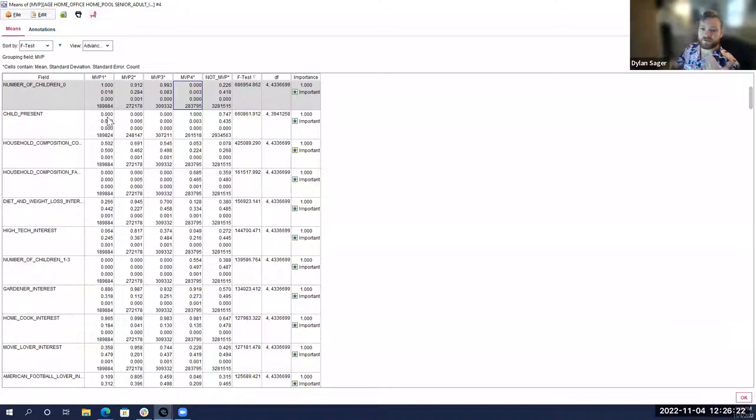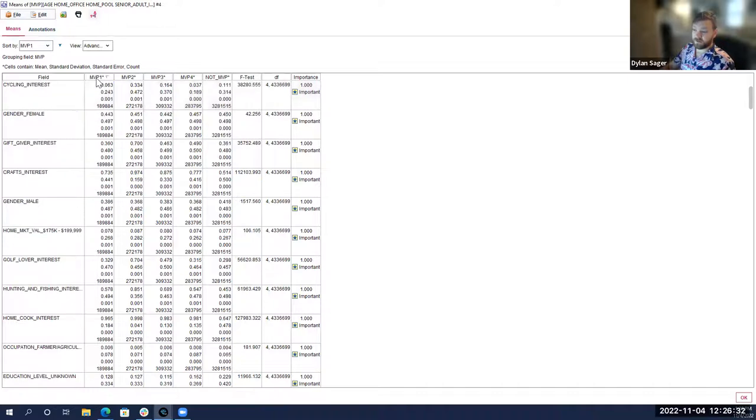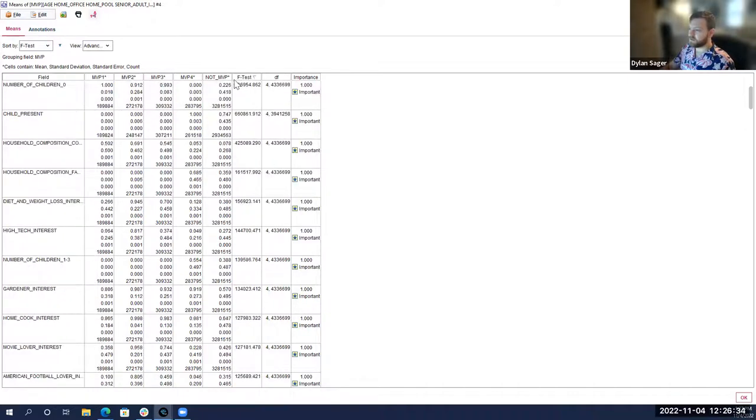Number of children zero, what that's indicating is the people within the group who had no children. We get some significant behavioral differences between MVP one and MVP four. What we can see here is MVP one, two, and three, they way over index on not having children. Those groups really don't have children in the household. MVP four way over indexes on not having zero children, which means that they have children.